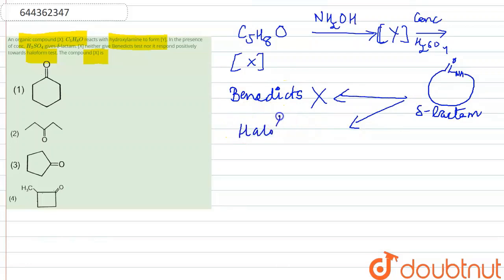It also does not react to haloform test. Haloform test is given by ketones or aldehydes, specifically methyl ketones. Methyl ketones are those which have this linkage CH3CO. When methyl ketones react with a haloform like Cl2, Br2, or I2, they form haloform. But this compound does not give haloform test.